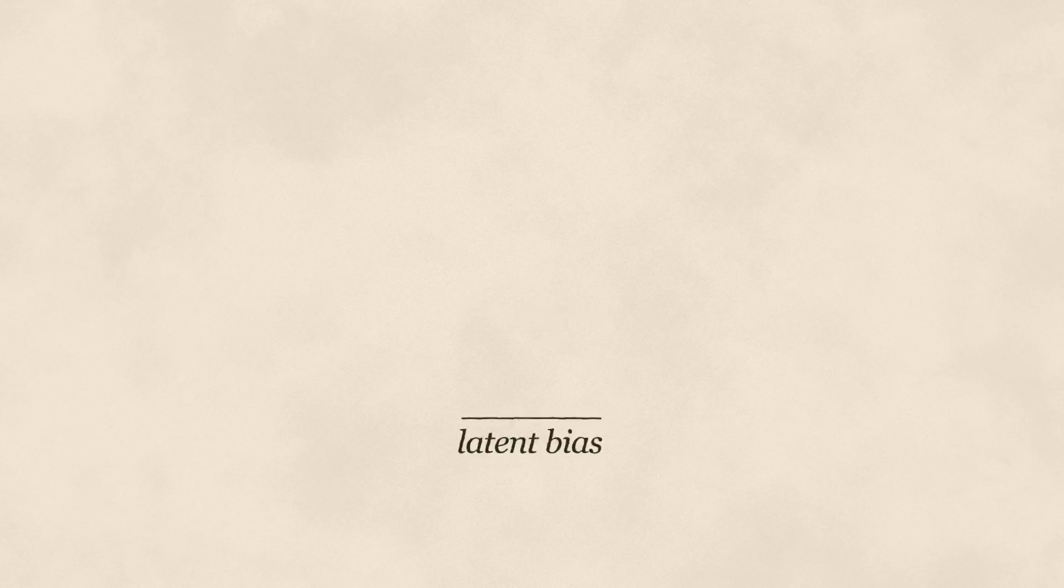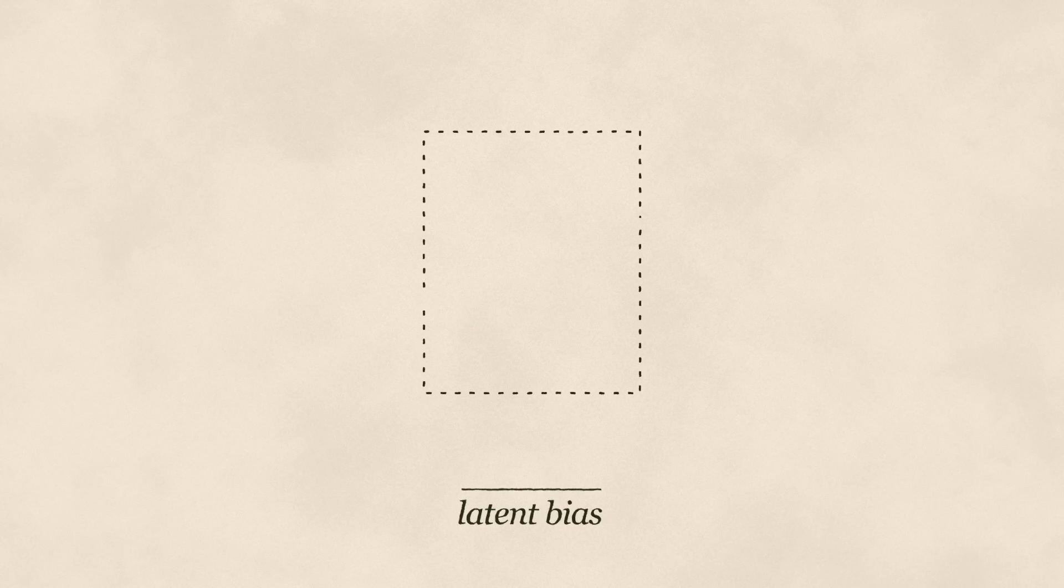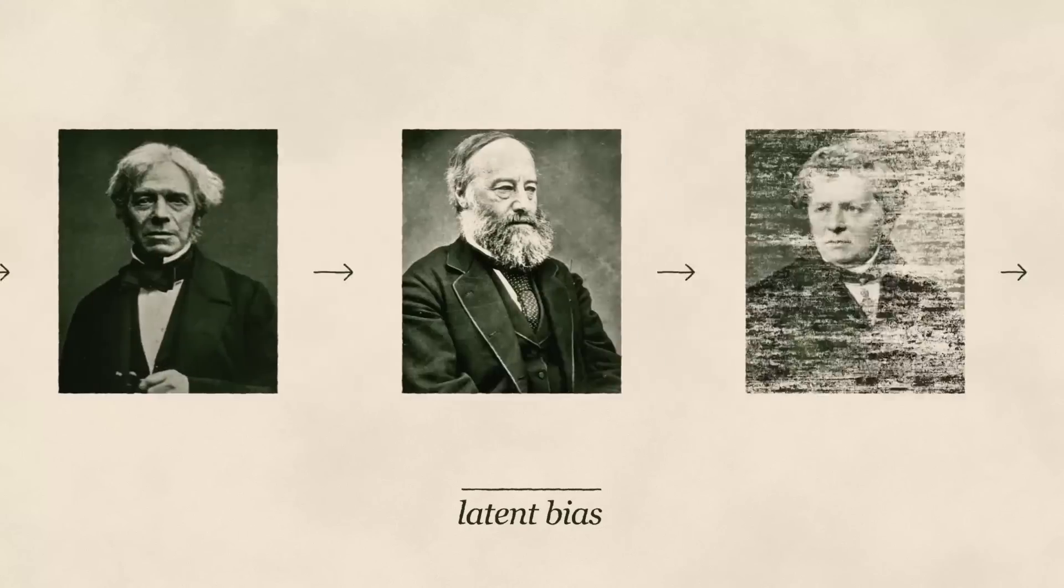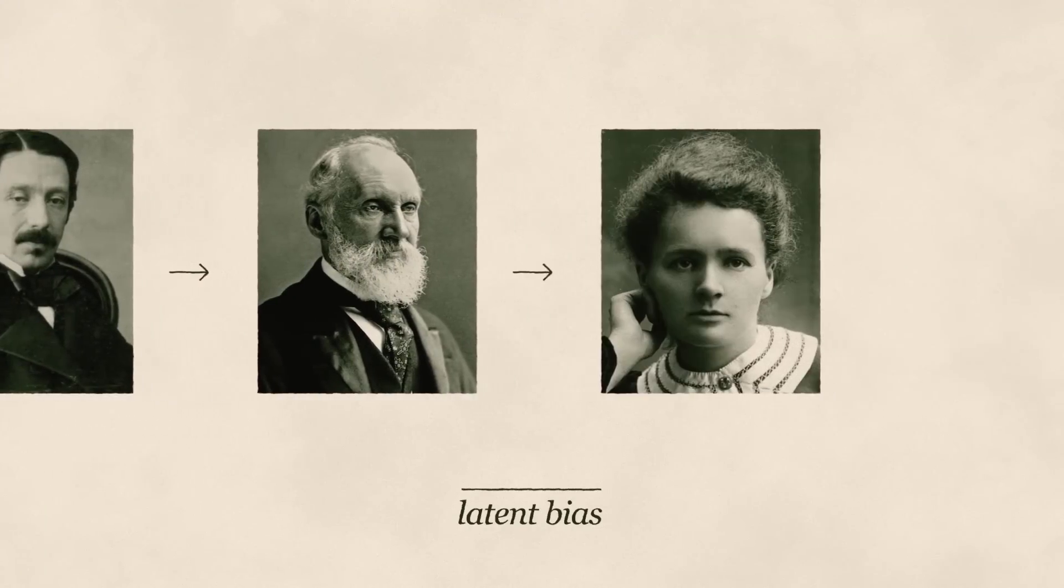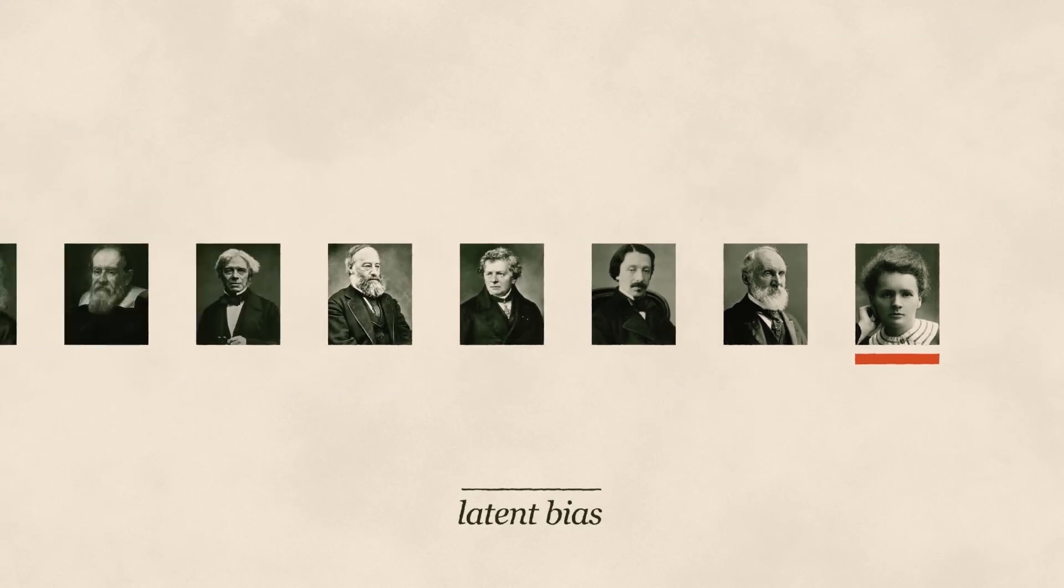Latent bias. For example, if you were training a computer on what a physicist looks like, and you're using pictures of past physicists, your algorithm will end up with a latent bias, skewing towards men.